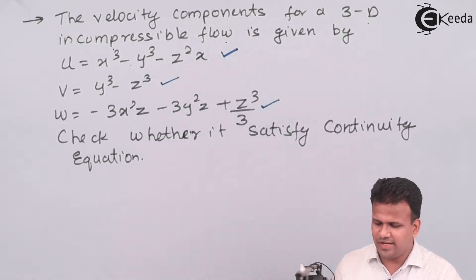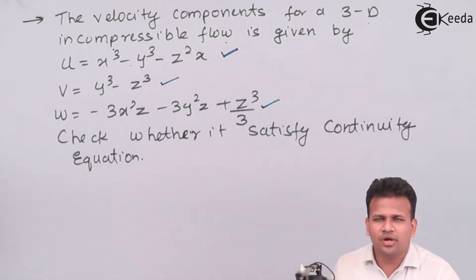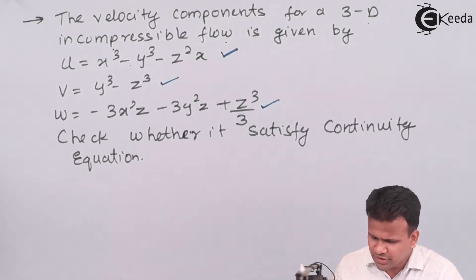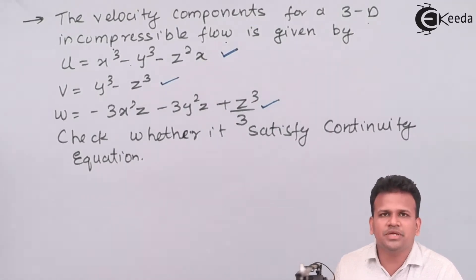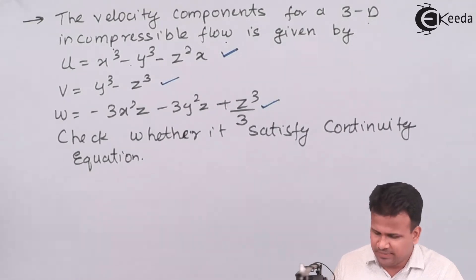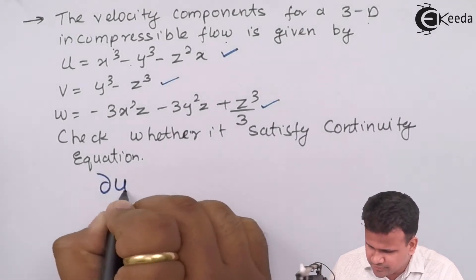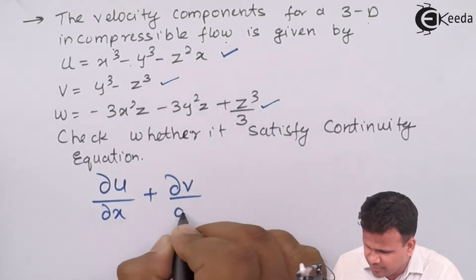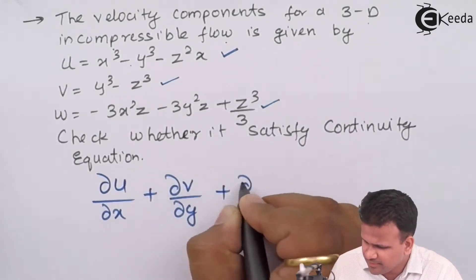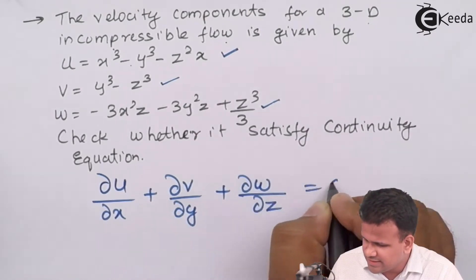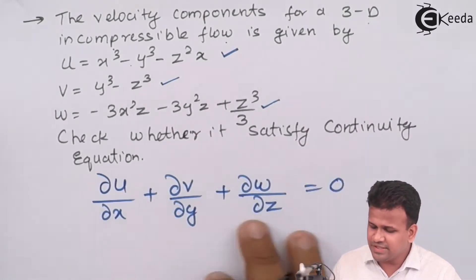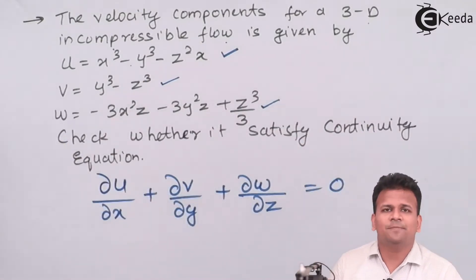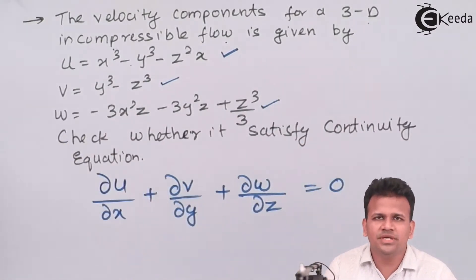To check whether it satisfies the continuity equation or not, we need to know what the continuity equation is. The continuity equation in the rectangular coordinate system gives us ∂u/∂x + ∂v/∂y + ∂w/∂z = 0. If this is satisfied, then the flow is possible; otherwise the flow is not possible.